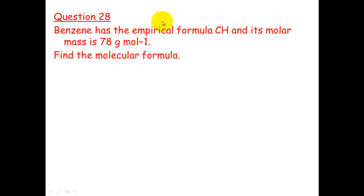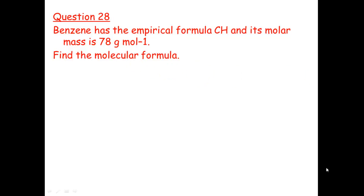If you're feeling confident, have a go at this question. A hint: make sure you work out the molar mass of CH, and you're told what the molar mass of the entire compound is, so you should be able to work that out. Give this a pause and have a go. The answer you should get is C₆H₆ — if you've gotten that, you don't need to watch any more. If not, I'm going to put the worked solutions up, and also the worked solutions for questions 29 and 30 in your booklet.